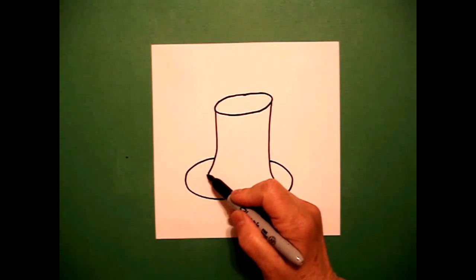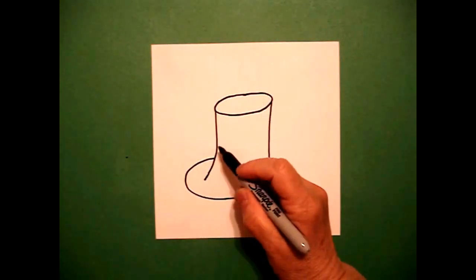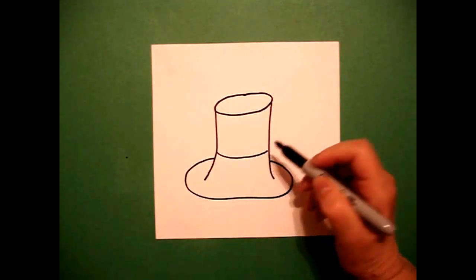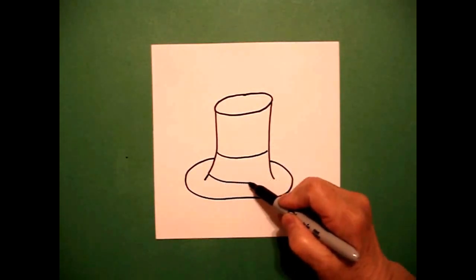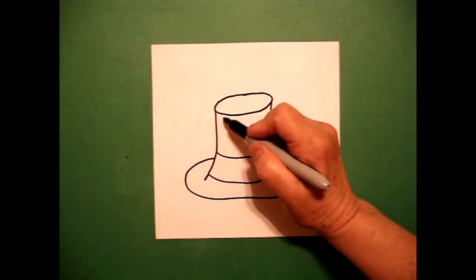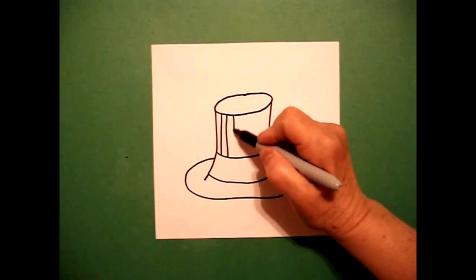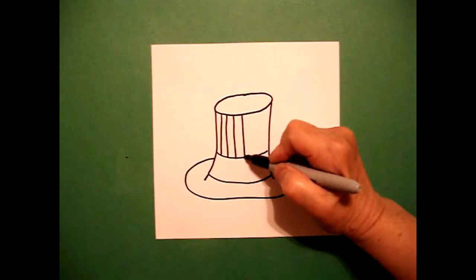Then I'm going to bring this down a little bit and I'm going to make my hat band. So I'm going to put a little curved line here and a little curved line there. I come up to the top and I draw straight lines all the way across, left to right.